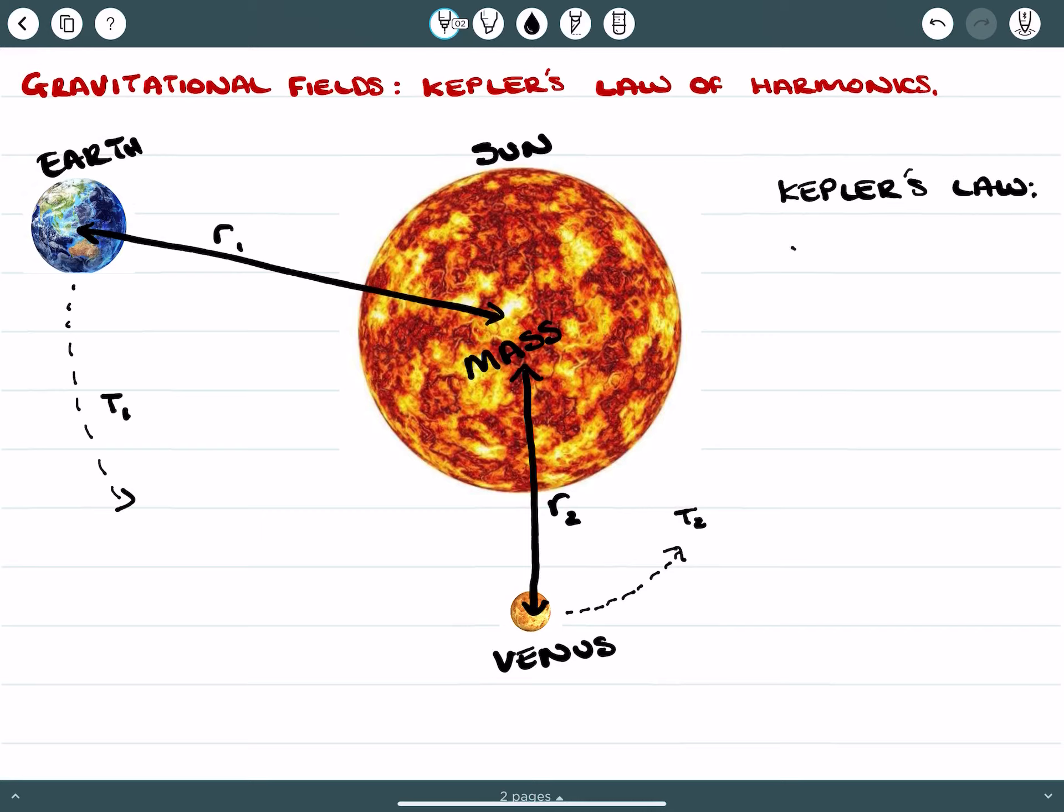Kepler's law is given by T₁² over r₁³ in harmony with T₂² over r₂³. You can see by my diagram I've highlighted what r₁ and T₁ are, referring to Earth in this example, and what r₂ and T₂ are, referring to Venus. They're in proportion to one another.